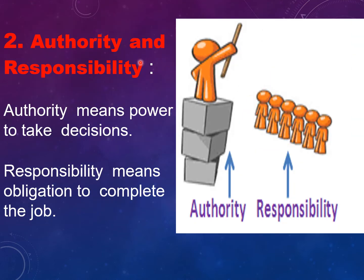The second principle is Authority and Responsibility. Authority is the power of a manager to take decisions or to give orders to subordinates. Responsibility means the obligation of the worker to complete the job assigned. In the image, the manager has the authority — the power to give orders — while the subordinates have the responsibility, or obligation, to complete the duties assigned.